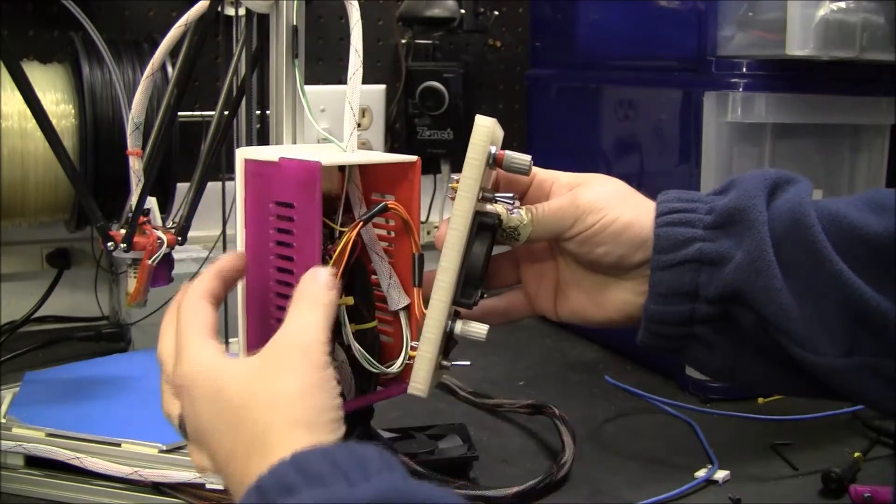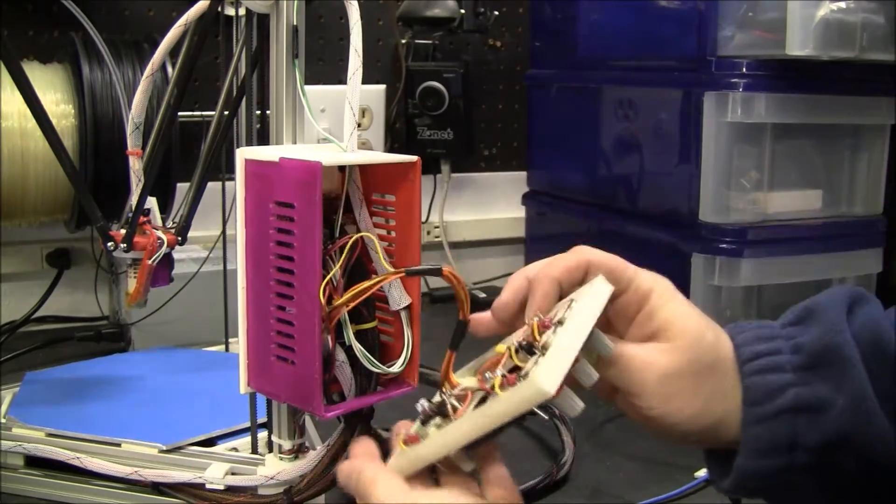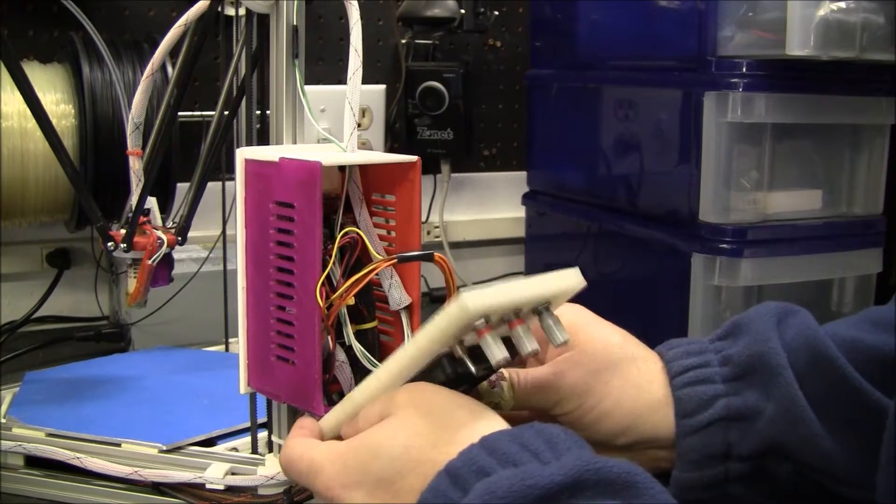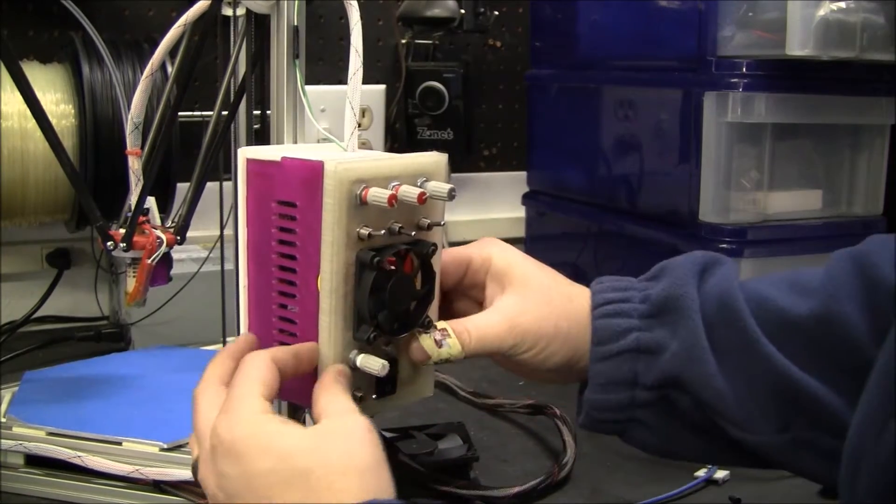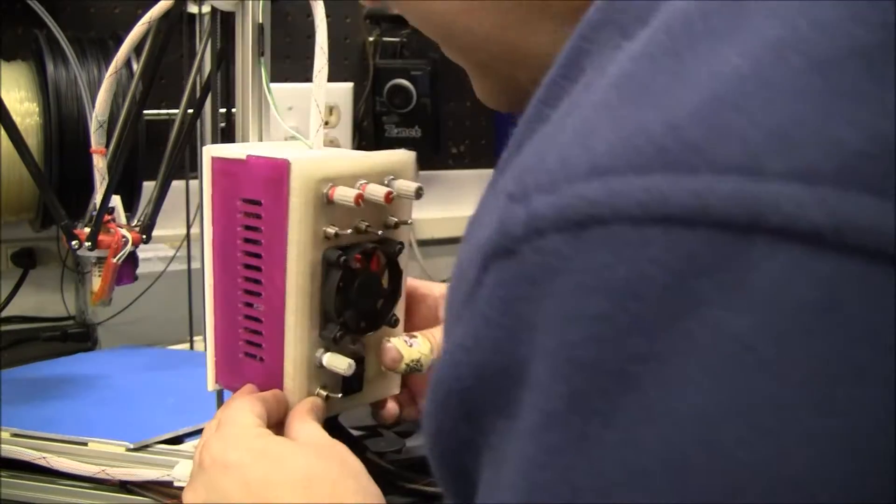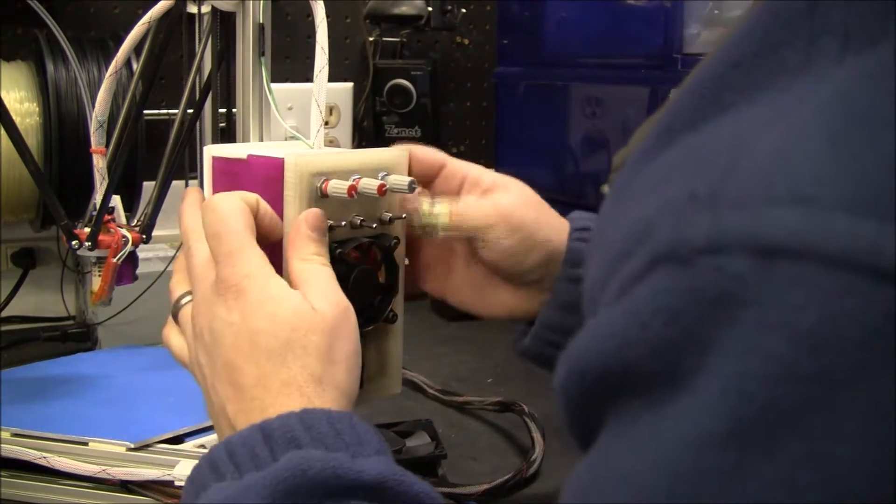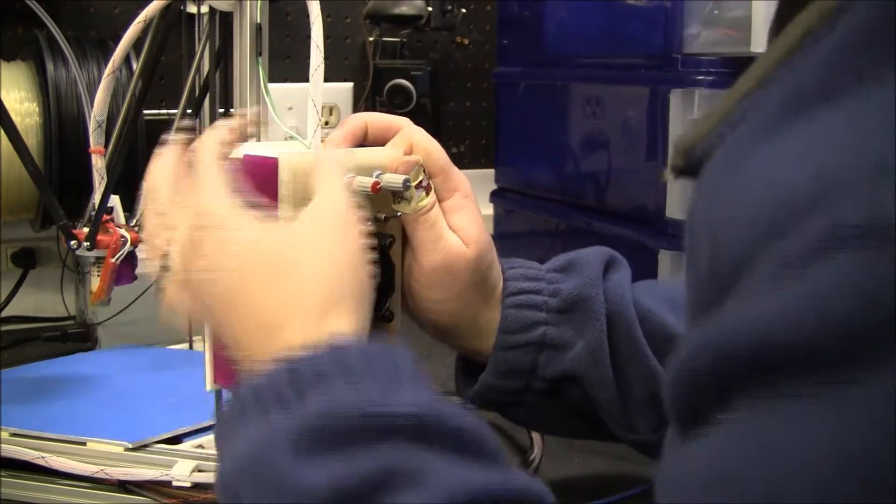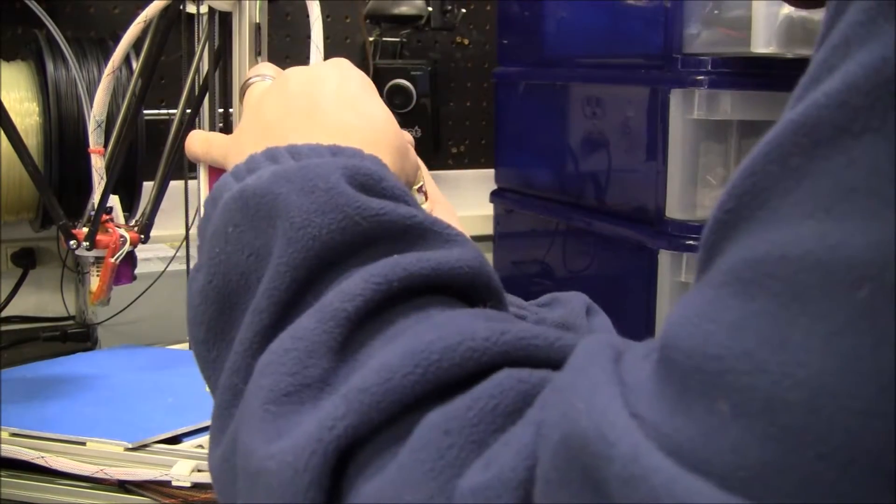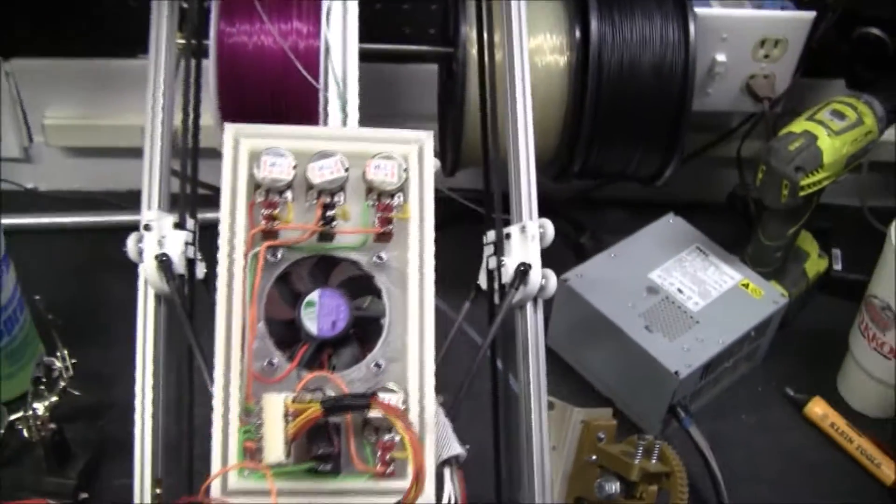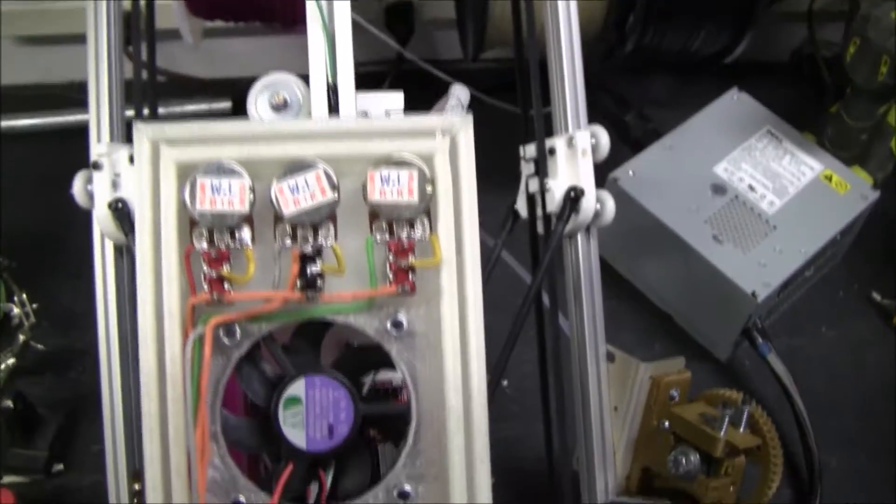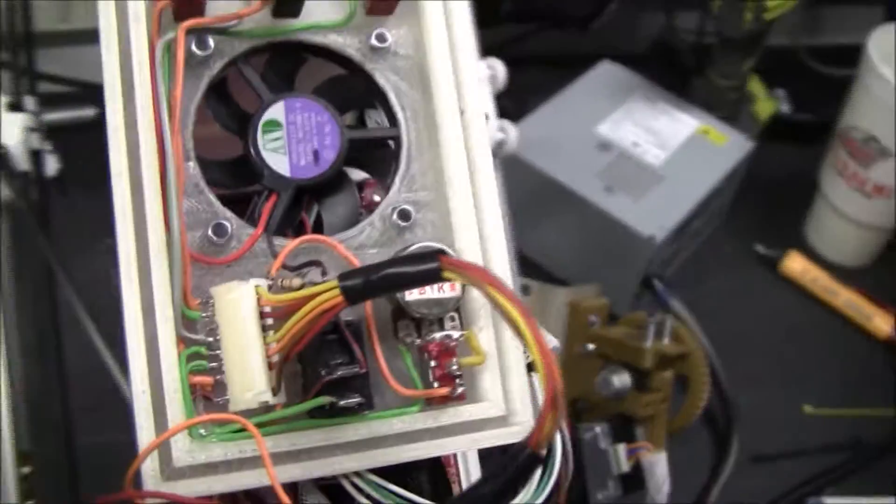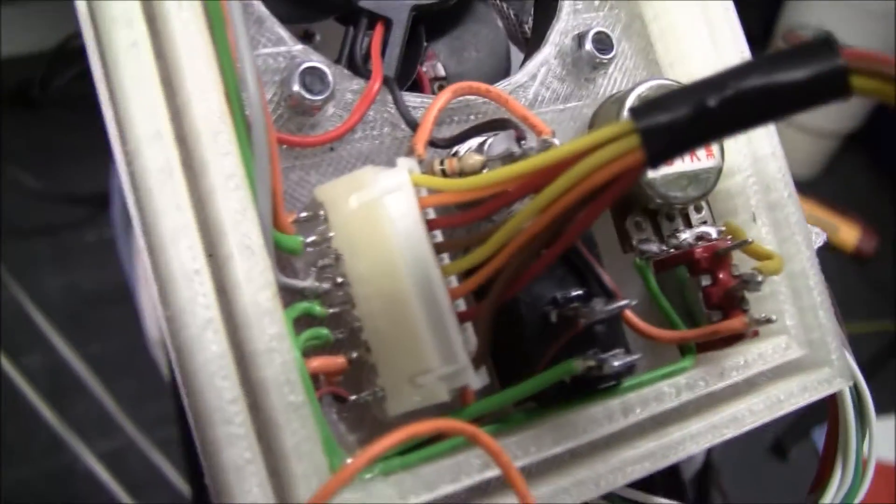So the pieces are kind of like puzzle pieces. They kind of snap together, and then the lid. I used a little rubber cement to kind of hold those in a little better. There you can see what it looks like with the connector, a little bit of hot glue.